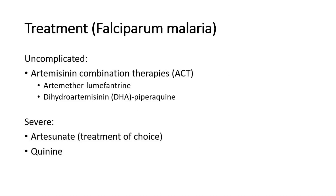For treatment of malaria, falciparum is the most severe species. Treatment depends on whether the disease is uncomplicated or severe. Features of severe disease include impaired consciousness or seizures, acute kidney injury, shock, hypoglycemia, pulmonary edema or ARDS, spontaneous bleeding, acidosis, hemoglobinuria, or parasitemia more than 10%. For severe falciparum disease, the treatment of choice is artesunate, with quinine as an alternative. For uncomplicated disease, artemisinin combination therapies (ACT) can be given, achieving rapid clearance of parasites by combined action at different stages of the parasite cycle.